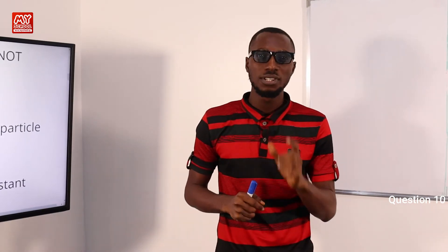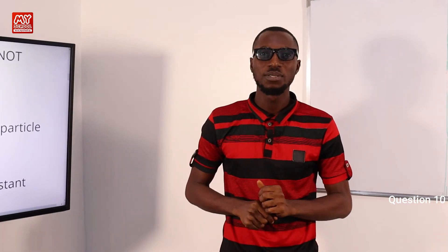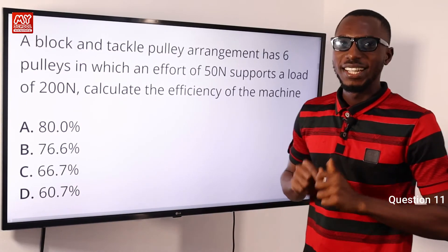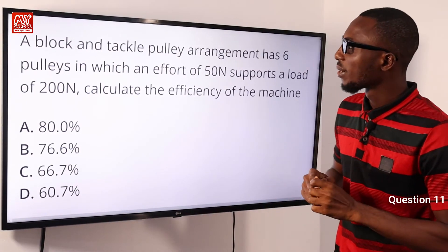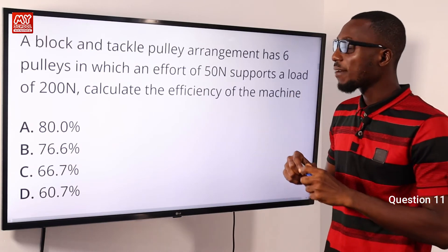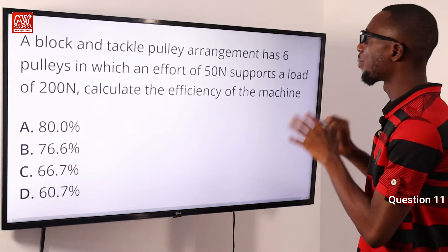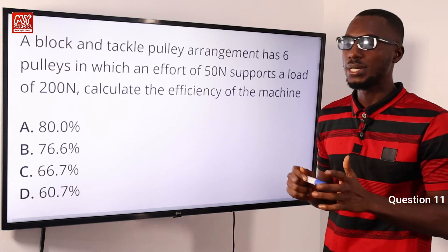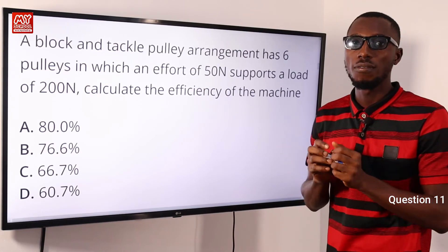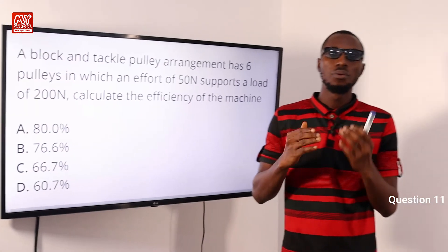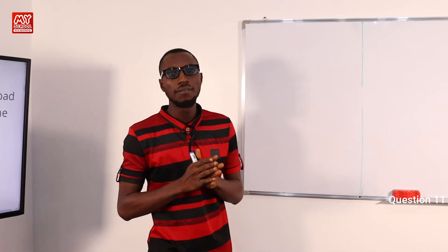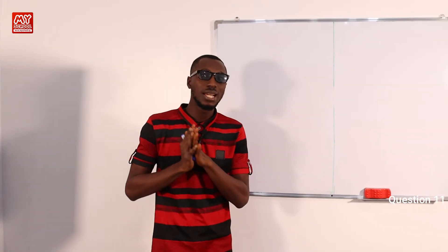If you have better explanations for any of the questions tackled so far, please use the comment section below and indicate the question number and suggestions you'd like to share. Question 11: a block and tackle pulley arrangement has six pulleys where an effort of 15 newtons supports a load of 200 newtons — calculate the efficiency of the machine.